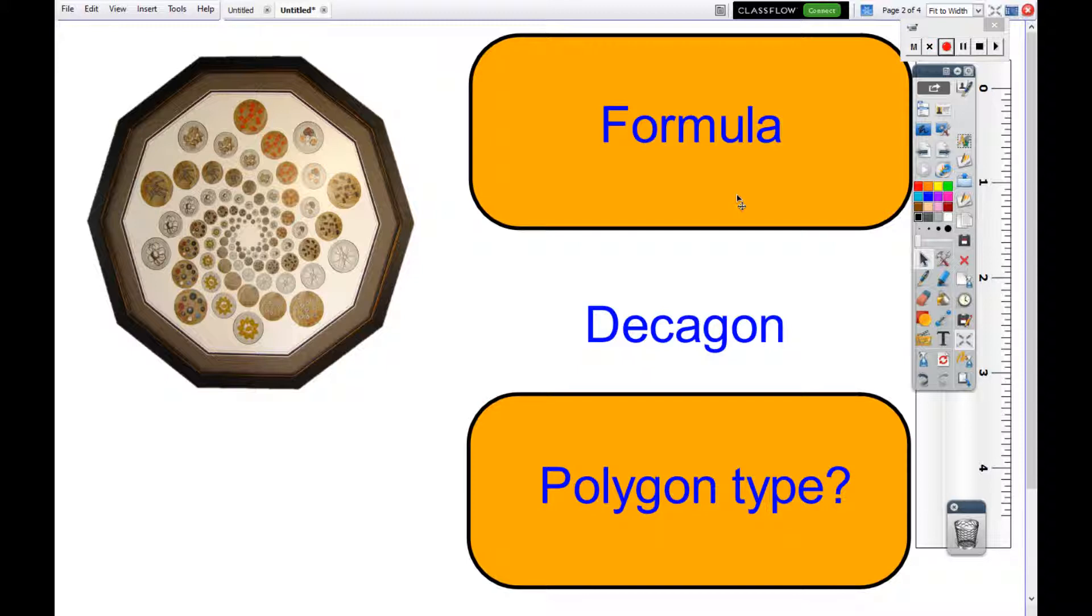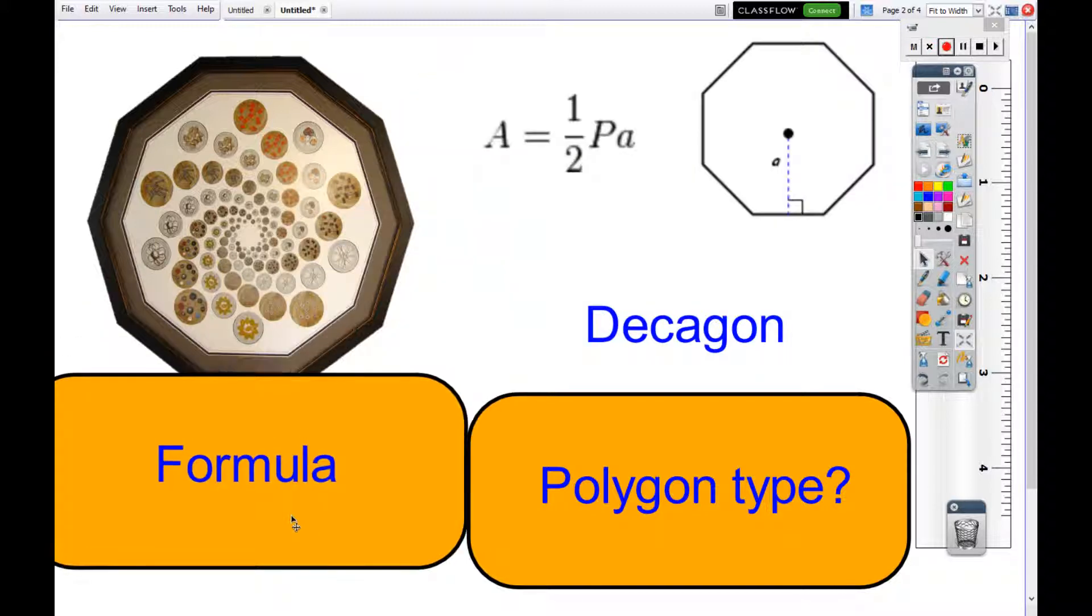The formula we're going to use for a regular polygon is area equals one half P times a, where capital P stands for the perimeter and lowercase a stands for the apothem. The apothem is from the center of the polygon making a perpendicular line with the edge.